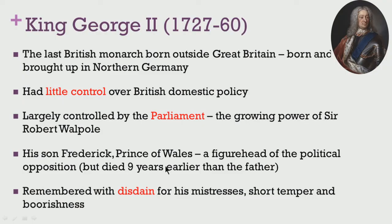Prince Frederick died 9 years earlier than his father, which in a certain way prevented some other challenges that King George II would have otherwise faced. Overall, George II is remembered with much disdain by his contemporaries and by posterity. He had many mistresses, which was not agreeable to the English public, and he also displayed a very short temper and extreme boorishness of character. These monarchs who succeeded Queen Anne did not make a significant contribution towards the development of art, literature and culture, nor did they interfere much in the affairs of culture or society.